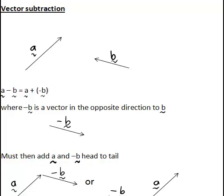And what this means geometrically, negative b is in the exact opposite direction to vector b. So it will appear parallel to b but with the arrow head in the opposite end of the vector so that it is pointing the opposite way.